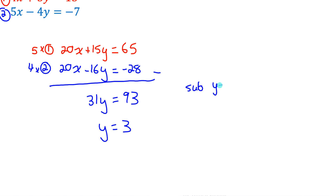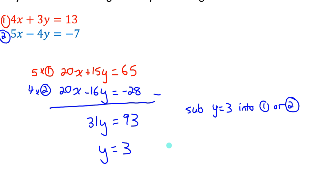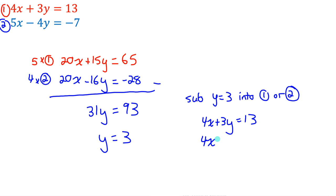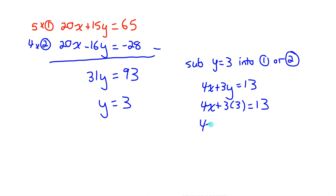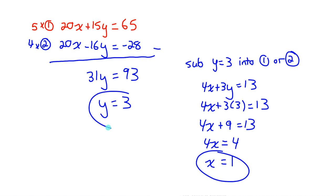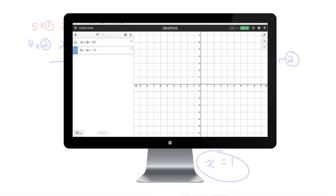Sub y = 3 into equation 1: 4x + 3(3) = 13, so 4x + 9 = 13. Subtract 9: 4x = 4, therefore x = 1. The solution to this linear system is x = 1, y = 3. If we were to graph both lines, they would intersect at the point (1, 3).